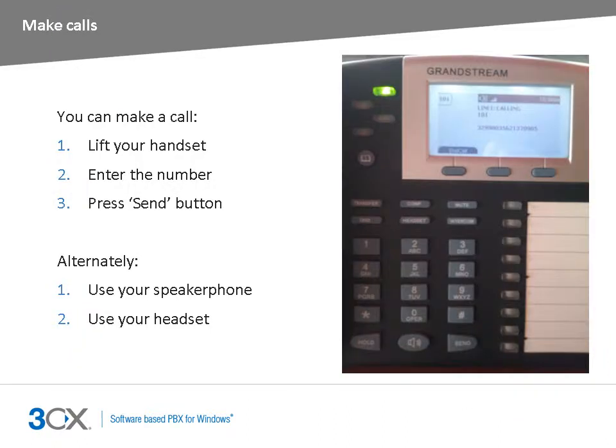Using your Grandstream phone, you can make calls by lifting your handset and entering the number and hitting the send button. Alternatively, you can press the speakerphone button to use your speaker, or press the headset button if you want to use a headset to make the call.